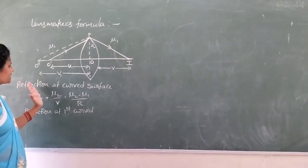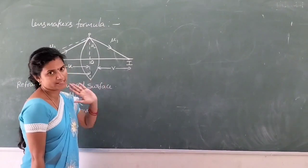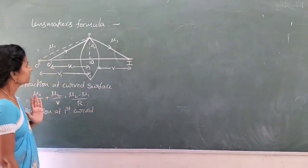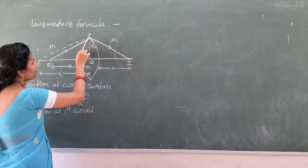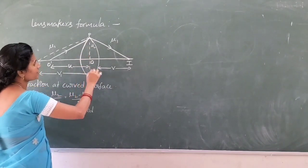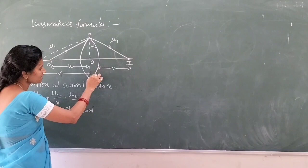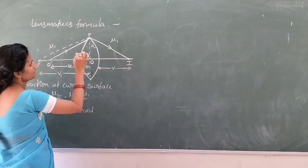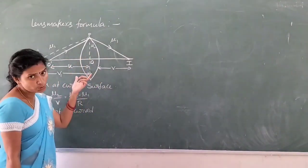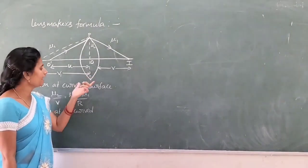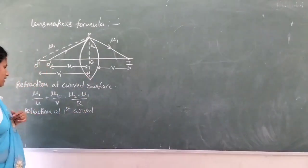This is the refraction at a curved surface. Here we have two curved surfaces, so we have to add the equations for these two curved surfaces. Then we will get the Lens Maker's Formula.